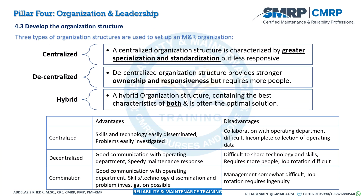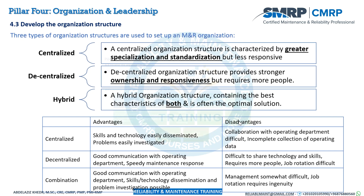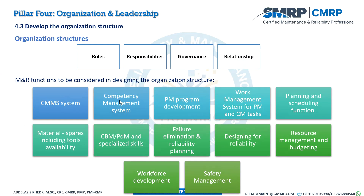We should develop an organization structure to deliver value. This may be a centralized, decentralized, or hybrid organization. For example, one condition monitoring team covering three plants is centralized, while each plant has its own maintenance team — decentralized. Combining both is called a hybrid structure. Each structure has its own advantages and disadvantages, and is governed by specific roles, responsibilities, and governance rules.